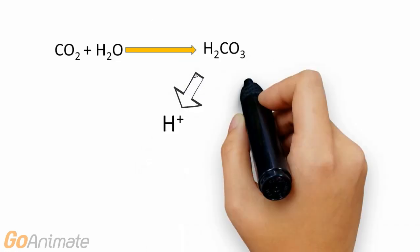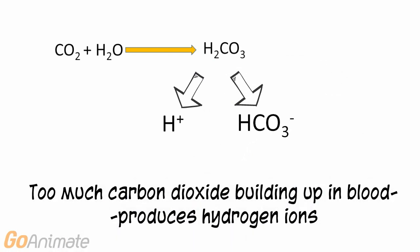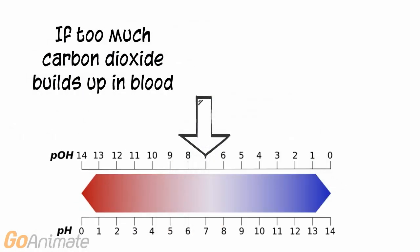Since this reaction also occurs in the blood but without carbonic anhydrase, a buildup of carbon dioxide in the blood can have an effect on blood pH because of the production of hydrogen ions. If the respiratory system cannot get rid of carbon dioxide...